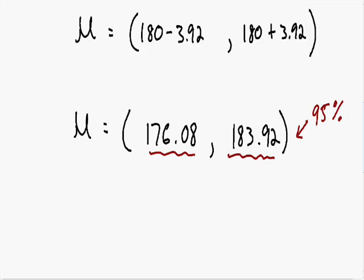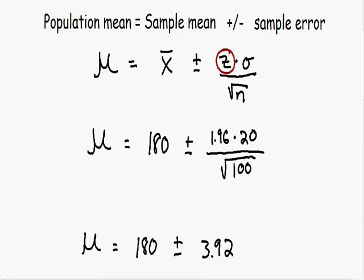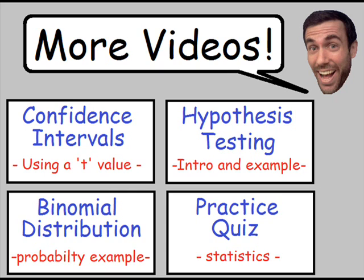One more thing before I finish this video: for this particular formula we used the letter Z, but sometimes we're going to use the letter T. I'll do another example when we need to use T — it depends on whether the population standard deviation is known and also on the sample size. I have a link for that video on confidence intervals using a T value in the top left corner, along with links for my other statistics videos on hypothesis testing and binomial distribution.